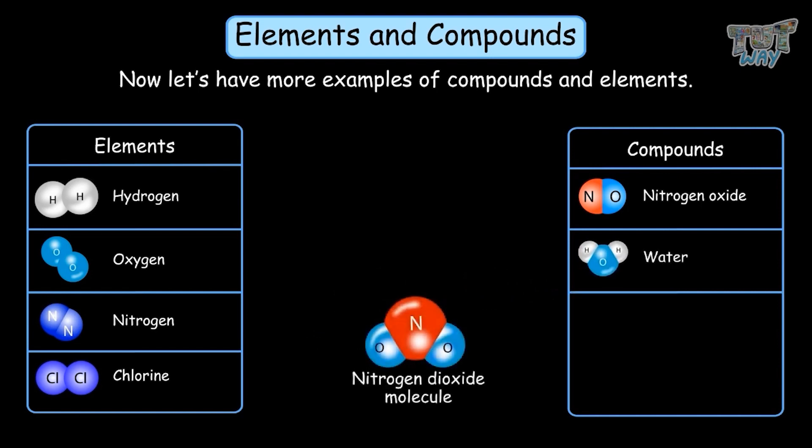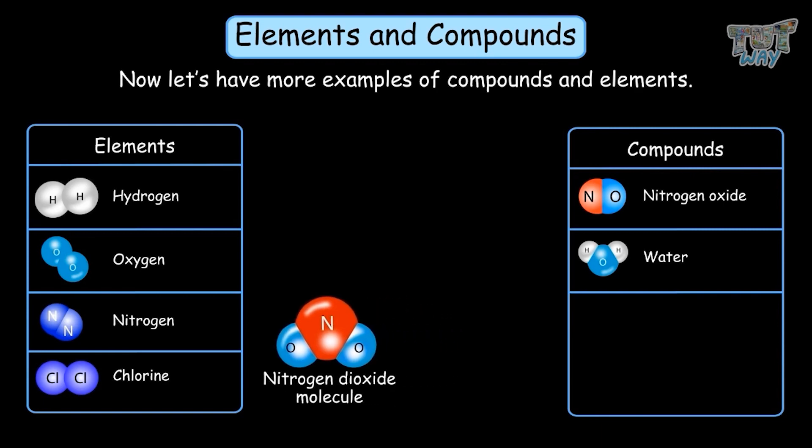Nitrogen dioxide is a compound because each molecule of nitrogen dioxide has two types of atoms — nitrogen and oxygen — and the formula is NO2.